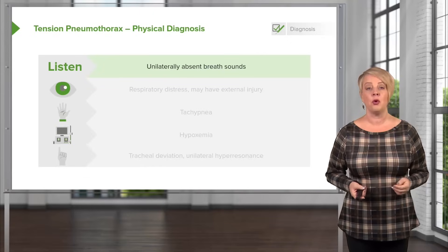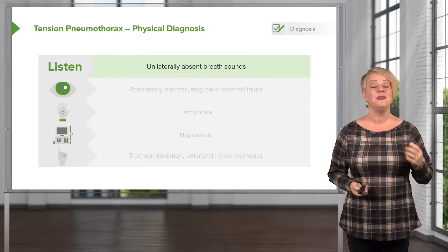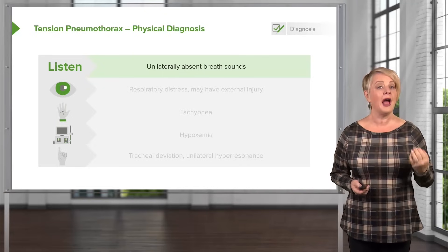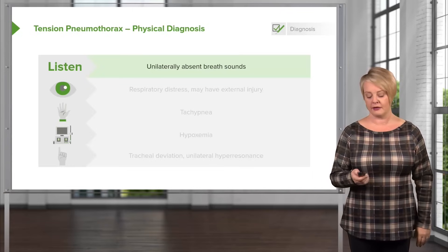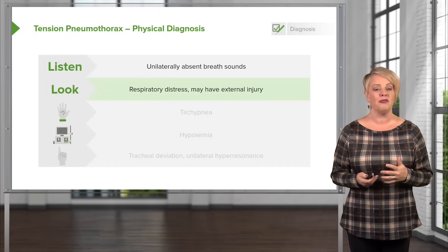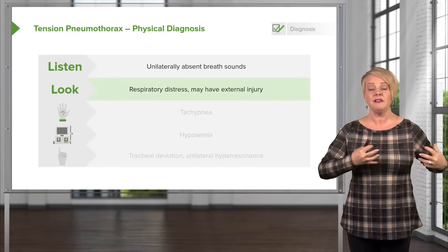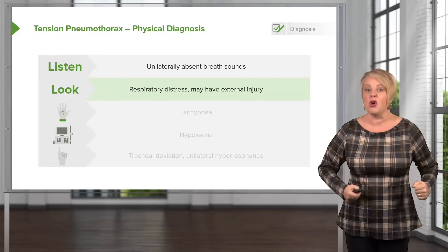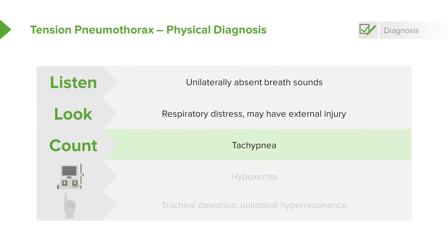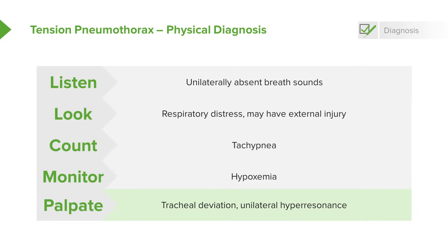To diagnose a tension pneumothorax, listen for unilaterally absent breath sounds — this is why bilateral auscultation is the first step of the primary survey for breathing. If breath sounds are absent on one side, strongly suspect tension pneumothorax. Also look for respiratory distress; patients are working very hard to breathe because the chest is hyperexpanded, and they will be tachypneic. The trachea will be deviated away from the lesion as the expanding air collection pushes everything to the other side.